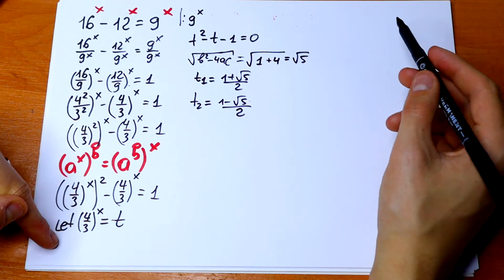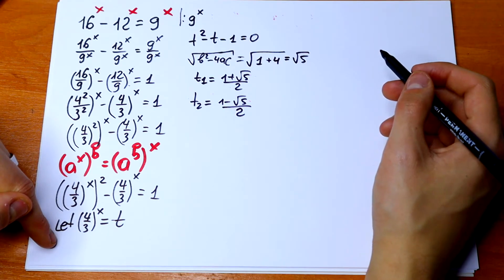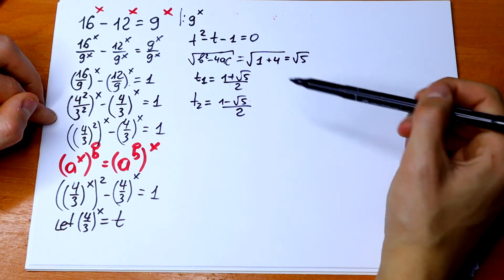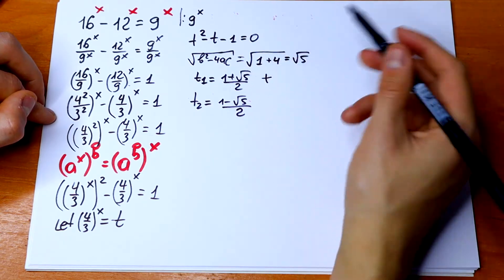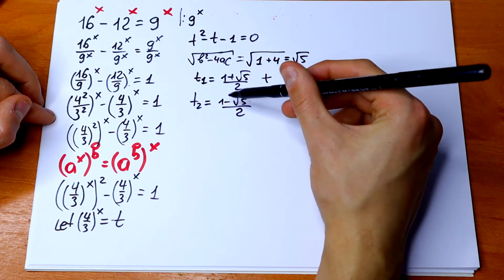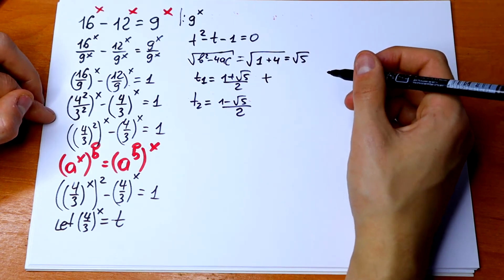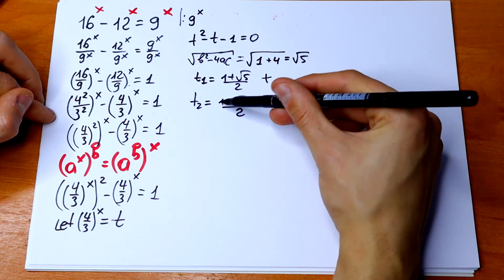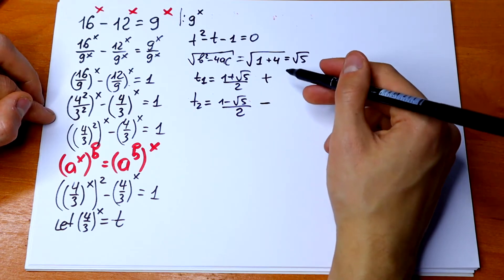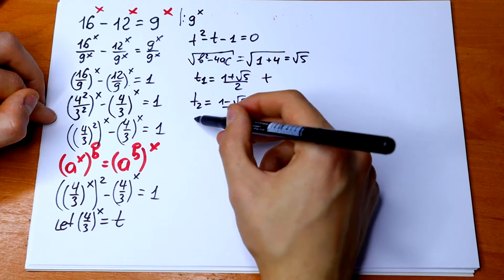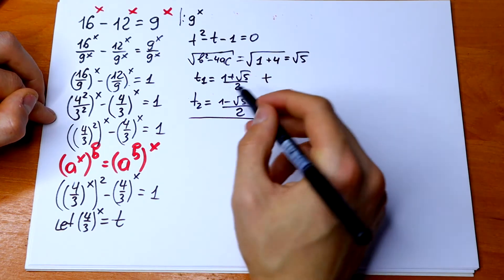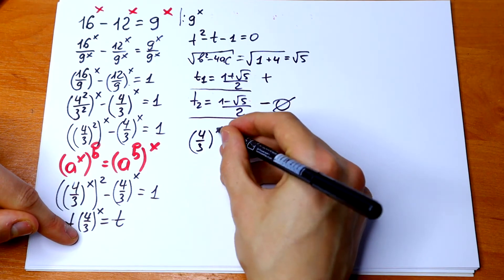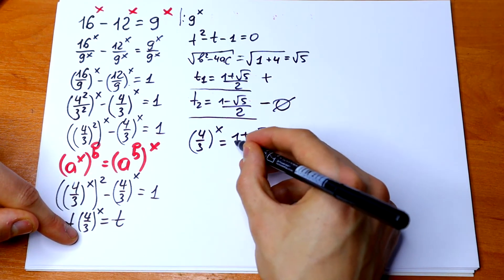We have two roots, but we need to check them against our substitution. We don't need a negative value, so we must reject any negative root. t1 equals 1 plus square root of 5 over 2 — this is positive. t2 equals 1 minus square root of 5 over 2 — since square root of 5 is about 2.2, this is negative, so we reject t2. We proceed with t1: 4 over 3 to the power x equals 1 plus square root of 5 over 2.